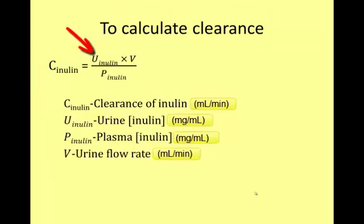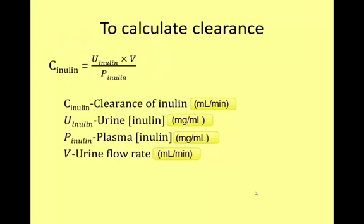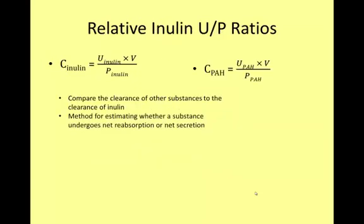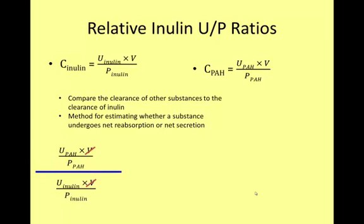The clearance equation uses the urine to plasma ratio of a substance multiplied by the urine flow rate. The clearance equation for inulin is used to estimate the GFR. It can be mathematically useful to compare the clearance of substances to inulin as an index of filtration, and this can determine whether a substance is undergoing net reabsorption or net secretion. When using U to P ratios of two different substances, the urine flow rate appears in both numerator and denominator and can therefore be eliminated.